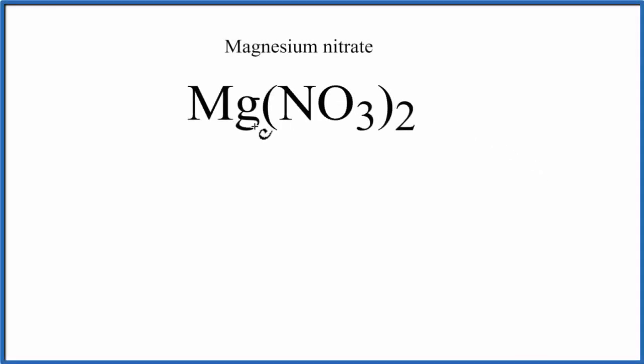In this video we'll write the Lewis structure for Mg(NO3)2, magnesium nitrate. Magnesium is a metal, and then NO3, those are non-metals. They're actually bound together tightly in what's called a polyatomic ion.